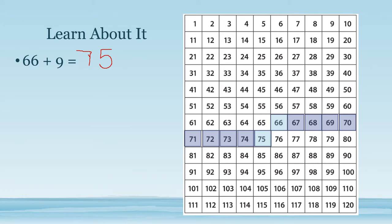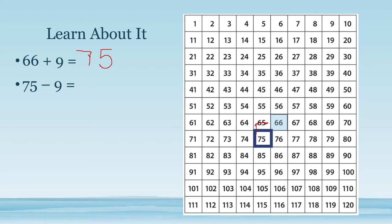Now let's try with subtraction. We will do 75 minus 9 by taking 9 ones away: 1, 2, 3, 4, 5, 6, 7, 8, 9. We can see that when we subtract 9, it's as if we took away 10 and then added one more back on. Taking away 10 would be too many, so we add one space back on so that we only took away 9. So 75 minus 9 equals 66.